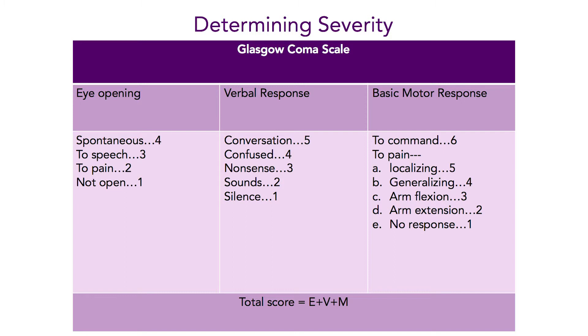Obtaining a total score on the GCS is done so by adding the performances of each of these three domains. The lowest possible score on the GCS is a three, and the highest possible score would be a 15. It would be consistent with somebody who is spontaneously opening their eyes, engaging in conversation, and able to follow simple motor commands, as I would be able to do, for example. However, TBI severity can be misclassified if only using one indicator, so there are other criteria used in helping to determine the severity, including length of loss of consciousness and post-traumatic amnesia, or PTA. PTA can be defined as the loss of memory following an injury. Imaging, such as CT scans, can also be used to identify structural damage that might contribute to the assessment of injury severity.